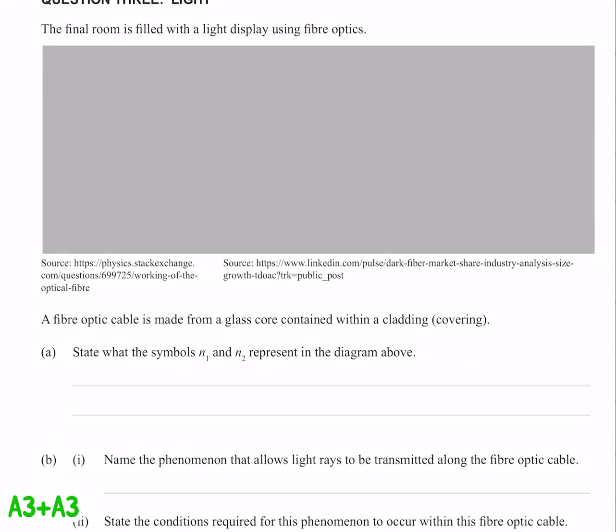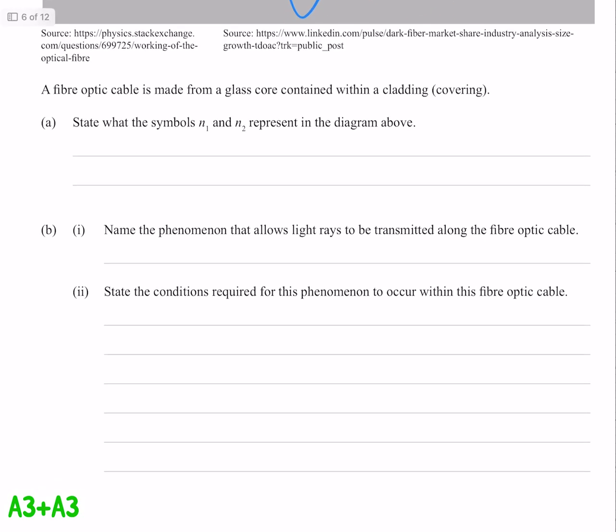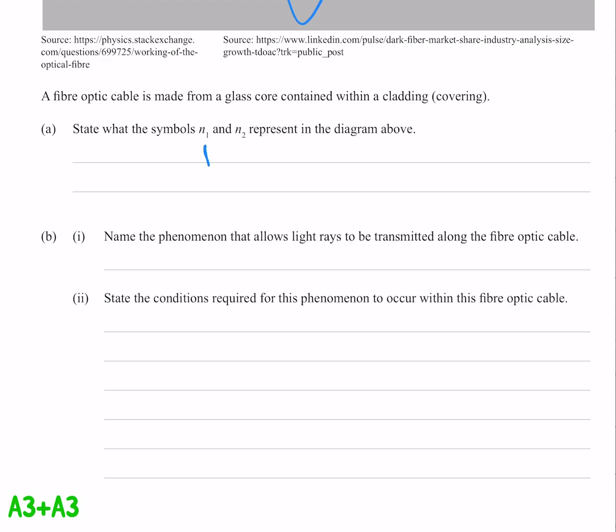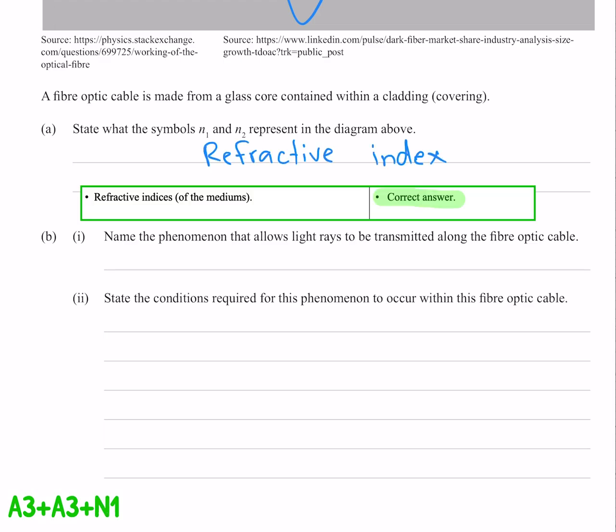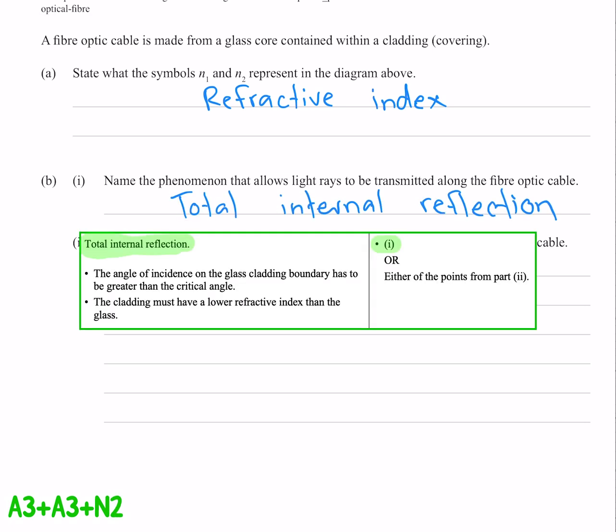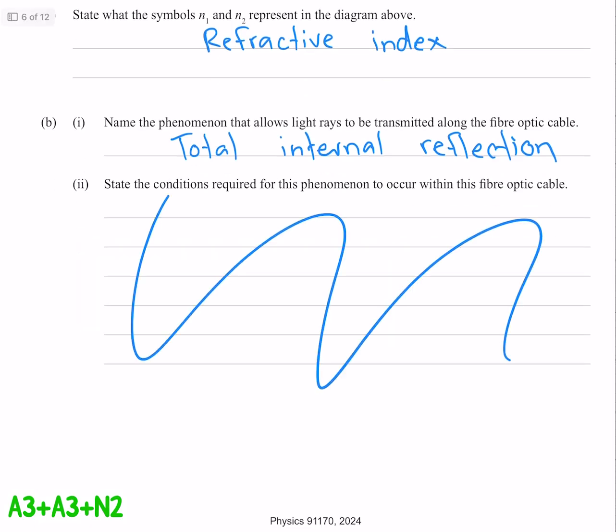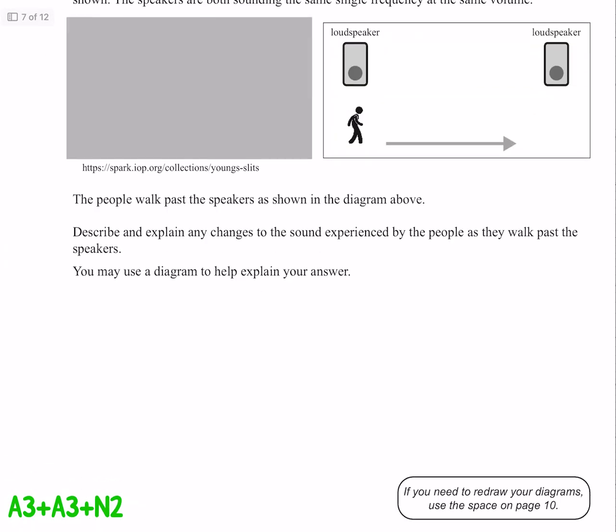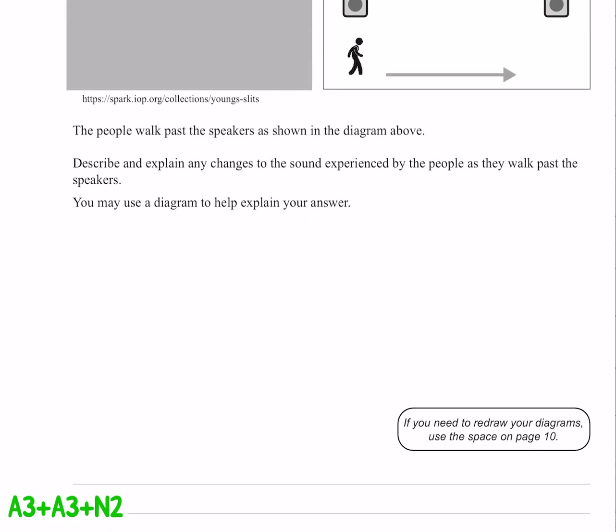For question 3, we've got this excellent grey rectangle here, and it looks like we're dealing with fibre optics. State what the symbols N1 and N2 represent - they're the refractive index. Name the phenomenon that allows light rays to be transmitted along a fibre optic cable - that's just total internal reflection. Skipping over this, and I think we're about done with question 3, and we'll move on to the next paper.